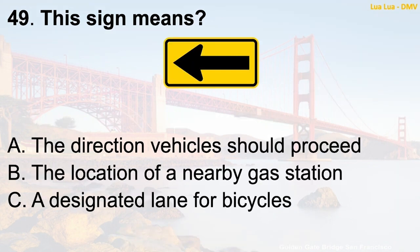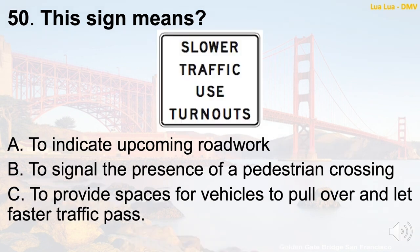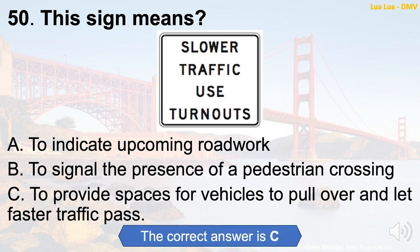Question 49: This sign means — A. To indicate upcoming road work. B. To signal the presence of a pedestrian crossing. C. To provide spaces for vehicles to pull over and let faster traffic pass. The correct answer is C: To provide spaces for vehicles to pull over and let faster traffic pass.